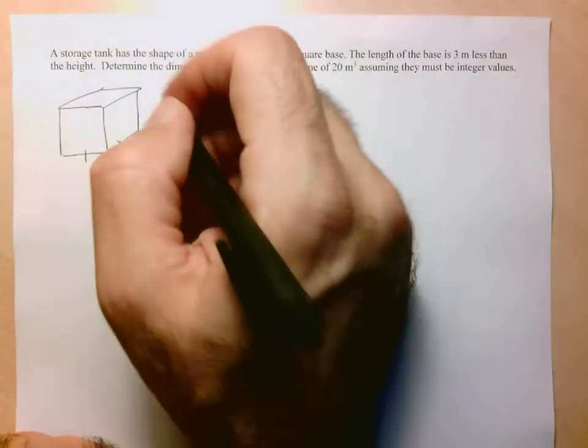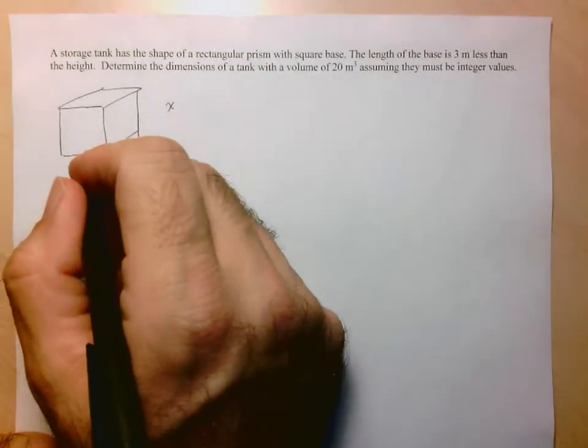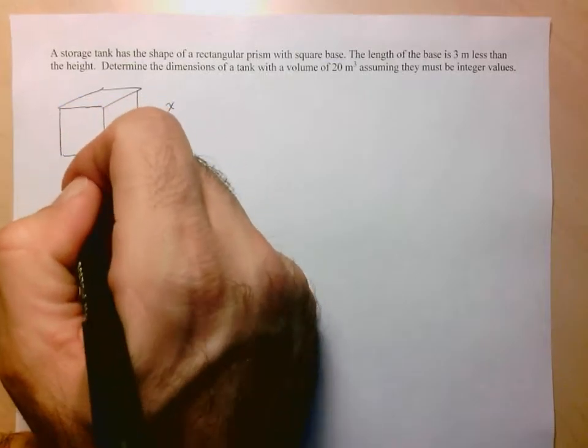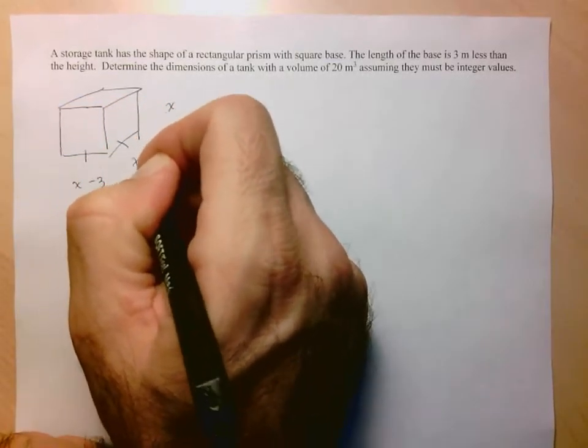There's two ways we can write this. If I call the height x, I know that the base lengths are going to be x minus 3, three meters less.